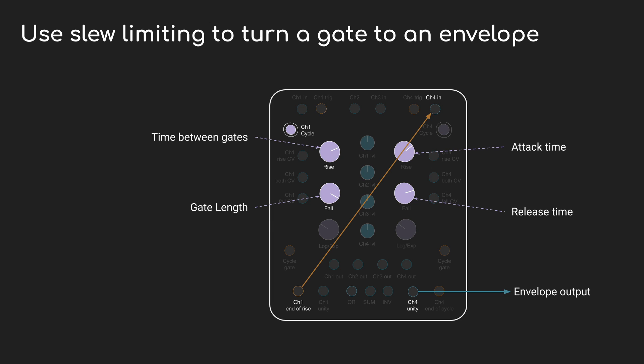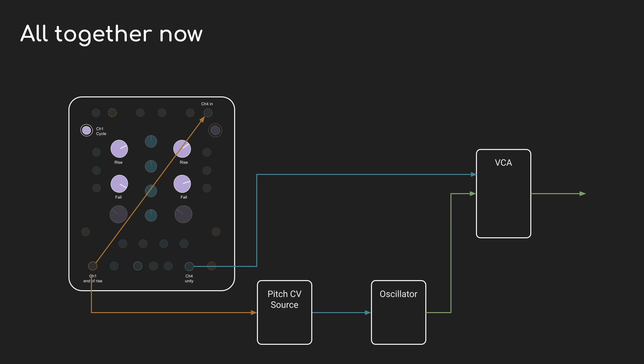Maths is generating my envelope and gate outputs. I have a noise source and a quantizer that will supply the pitch CV, and that's all running through the harmonic shift oscillator. The output from the oscillator is running to the VCA, and so is the envelope coming out of Maths. And from there it goes into some reverb because, you know, reverb.